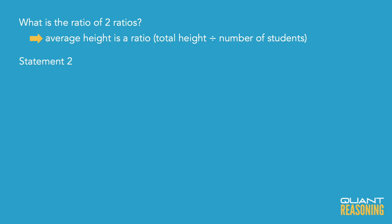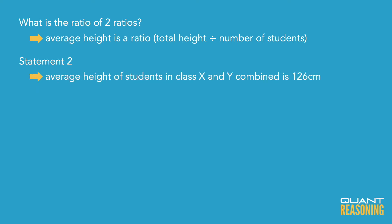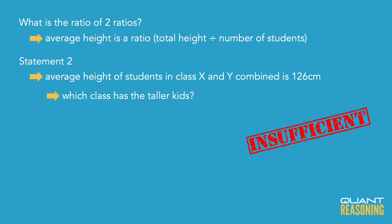Statement two on its own tells us that the overall average height for the two classes combined is 126, but I can't even tell which class has the taller kids and which class has the shorter kids, so I certainly couldn't tell you the ratio of the two classes. Statement two is not sufficient on its own either, so eliminate B.